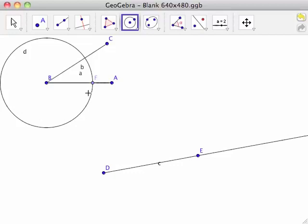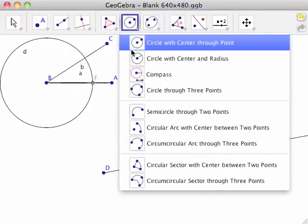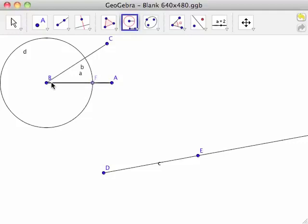Select the compass tool from the circle toolbar and click first on point F, then on point B. This attaches a circle with the same radius as circle D to the cursor. Move the cursor to point D and click to place the center of the circle at point D.